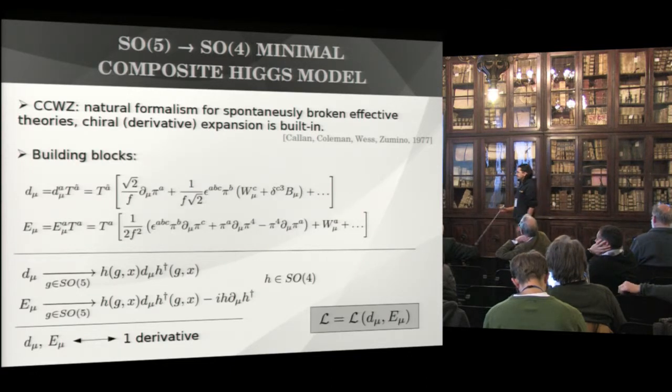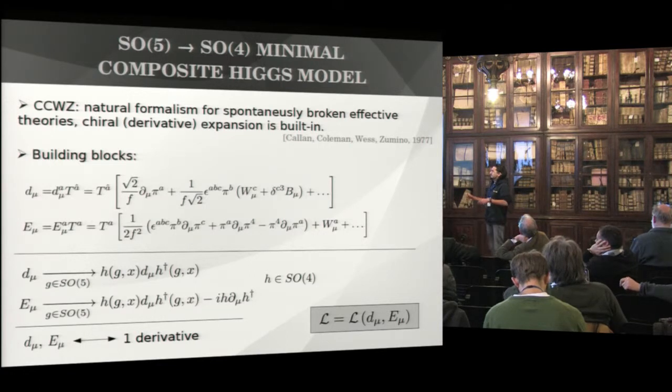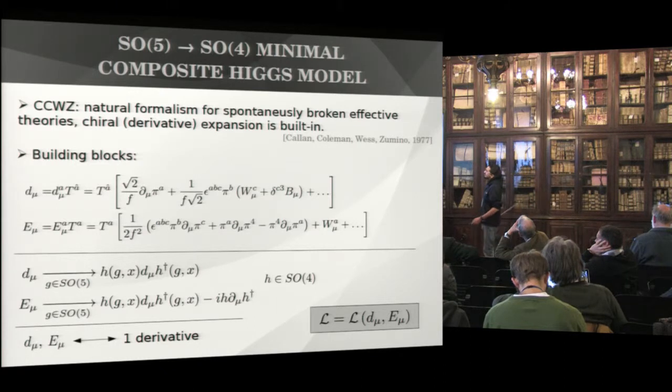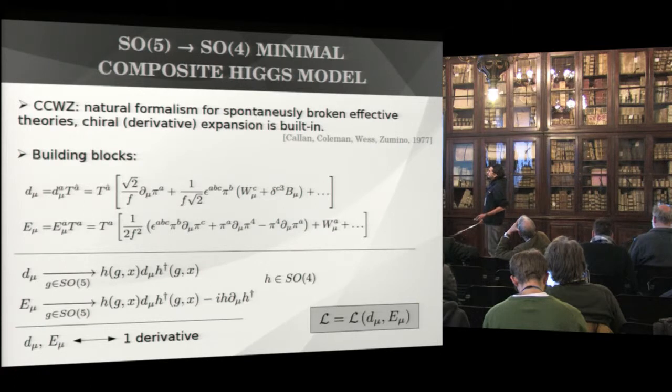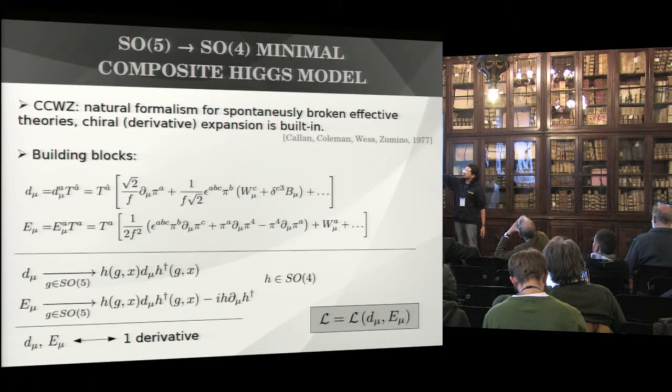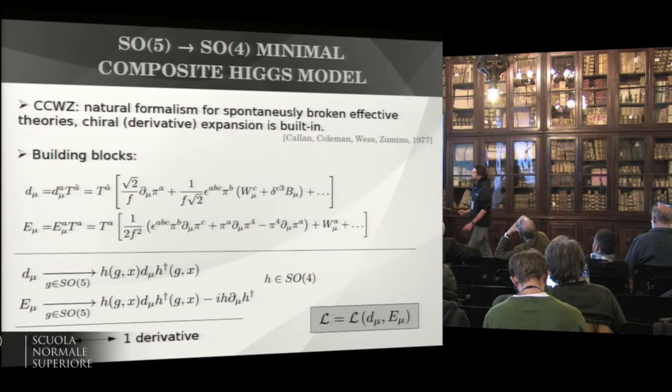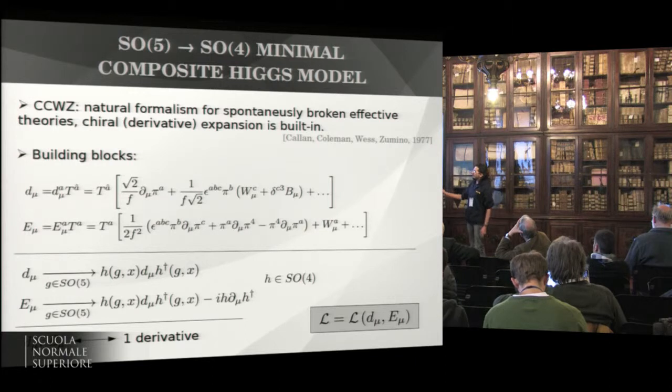This model will be built with the language of the CCWZ formalism, which is the natural formalism for spontaneously broken effective theories, as it already features the chiral expansion in a very easy way. Without going too much in depth in the formalism, let me just say, we have these two building blocks, which are two matrices. d is decomposed along the broken generators, so the SO(5) over SO(4) coset. E is decomposed along the unbroken generators. Their expression is this, so they contain an infinite sum of terms with increasing number of fields. This is a distinctive feature of the CCWZ formalism.